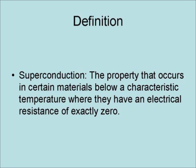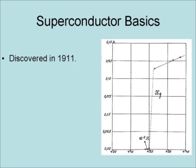Superconductivity is the property that occurs in certain materials below a characteristic temperature where they have an electrical resistance of exactly zero. Although superconductors were discovered in 1911, it still took years to understand because the necessary theory was not yet in place.